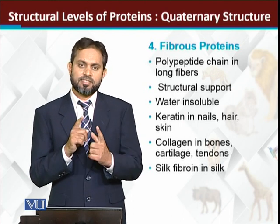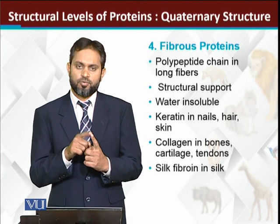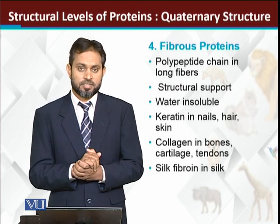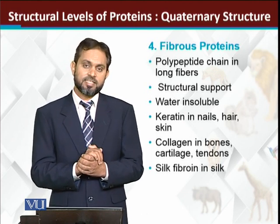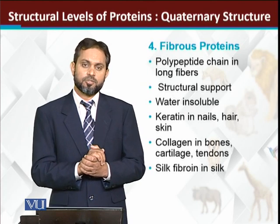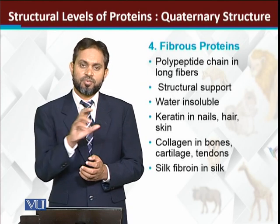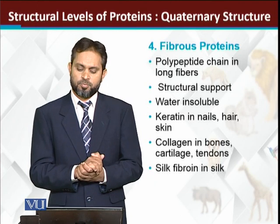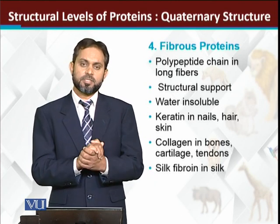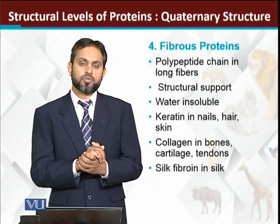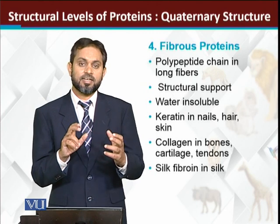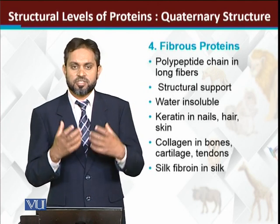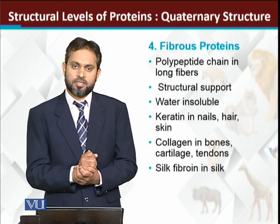So scientists have divided proteins into two broad categories for convenience. The first category is the fibrous proteins and the second one is the globular proteins. Fibrous proteins are those whose folding pattern creates a fibrous, thread-like structure. Because fibrous proteins form a thread-like structure, they have a structural role — the structures of our body are largely made up of fibrous proteins.